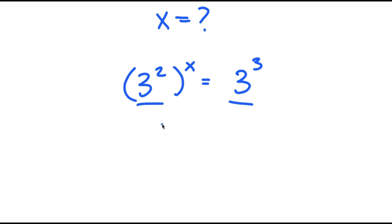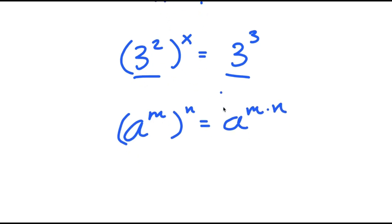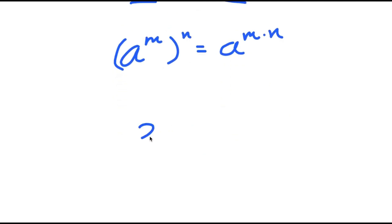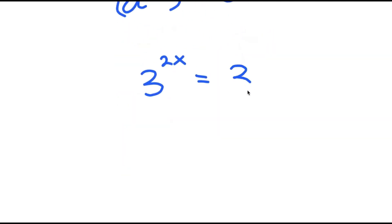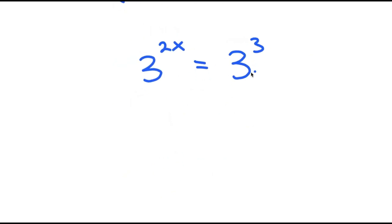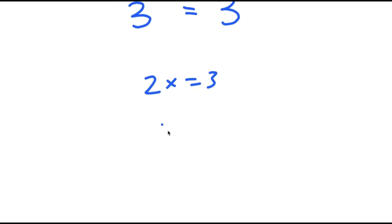From here, if I have something in the form a to the power of m to the power of n, this is equal to a to the power of m times n. So 3 to the power of 2 to the power of x becomes 3 to the power of 2x. So I get 3 to the power of 2x is equal to 3 to the power of 3, meaning 2x is equal to 3, and x is equal to 3 over 2.